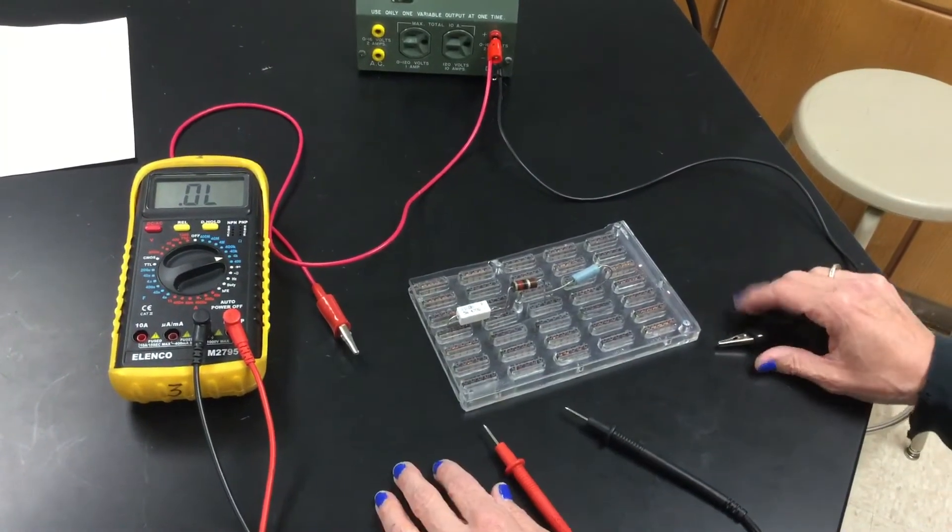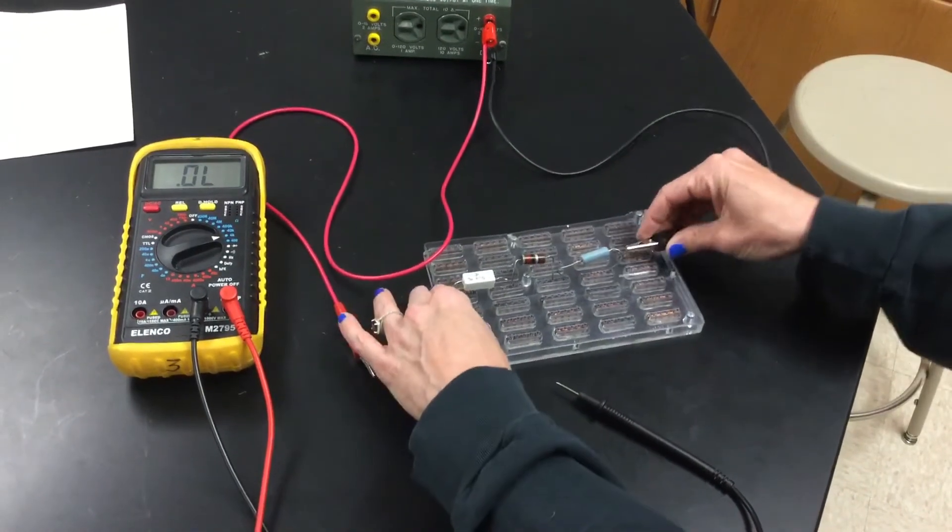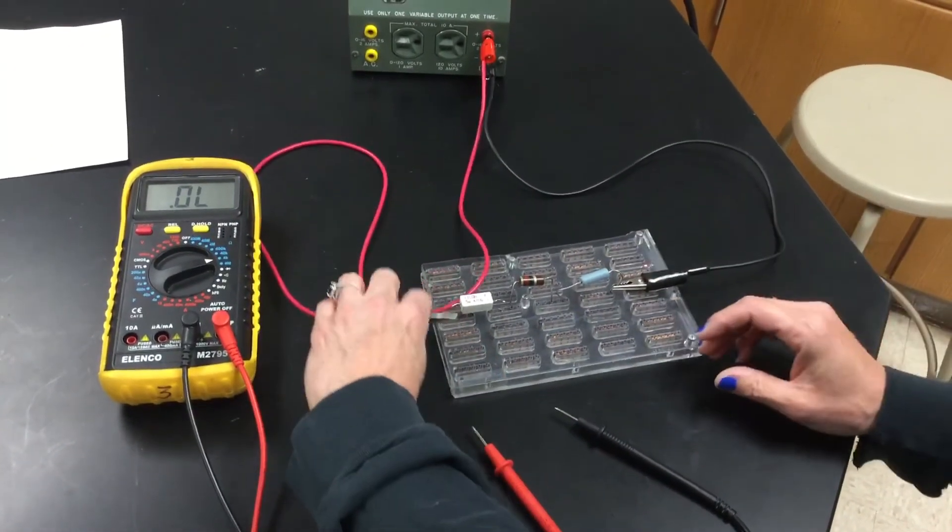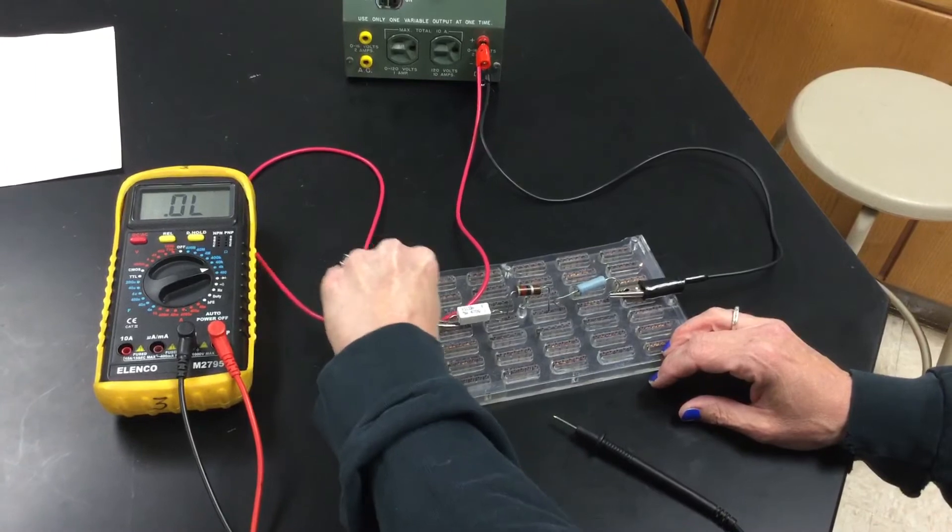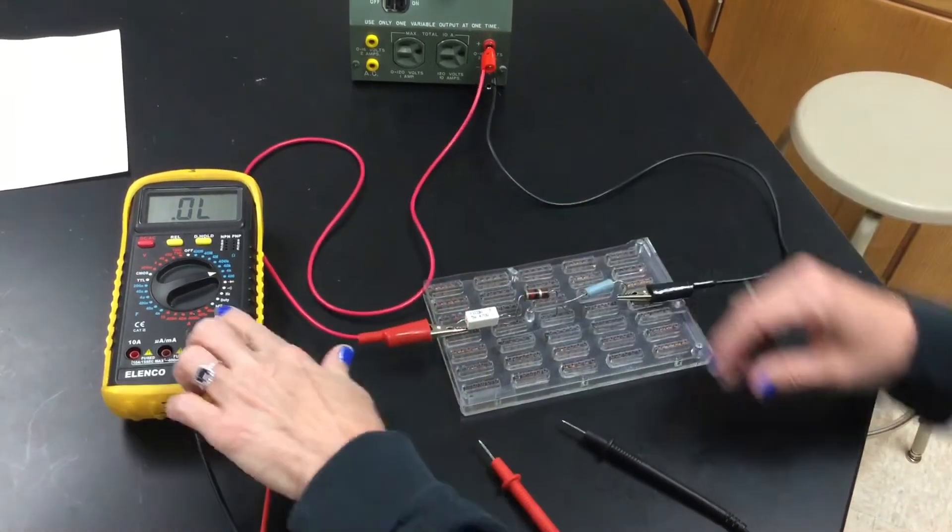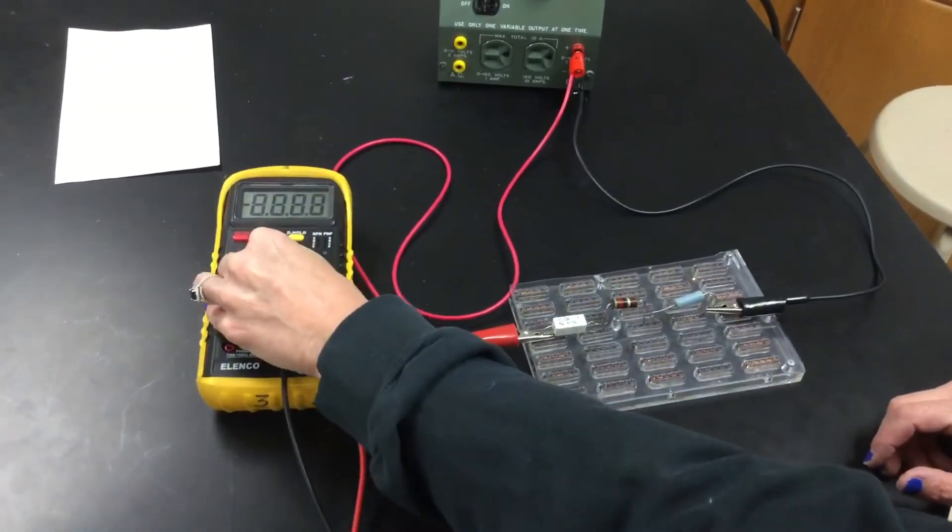So now we're going to measure voltage. To measure voltage, you're going to actually have to connect the power. Leave the red cord where it is, but then move the dial to 40 volts.